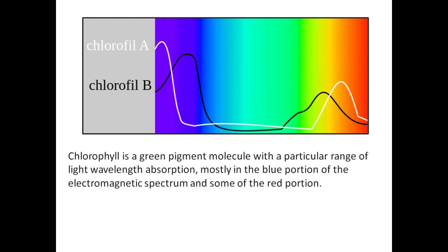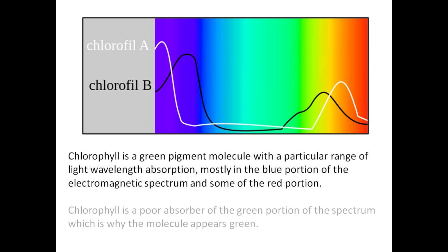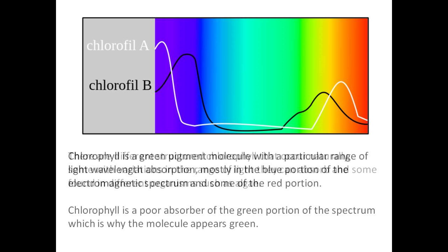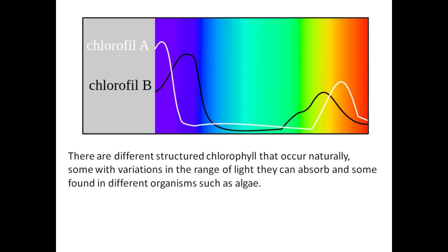Chlorophyll is a green pigment molecule with a particular range of light wavelength absorption, mostly in the blue portion of the electromagnetic spectrum and some of the red portion. Chlorophyll is a poor absorber of the green portion of the spectrum, which is why the molecule appears green. There are different structured chlorophylls that occur naturally, some with variations in the range of light they can absorb, and some found in different organisms such as algae.